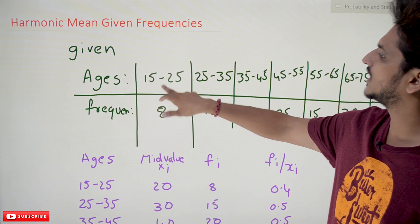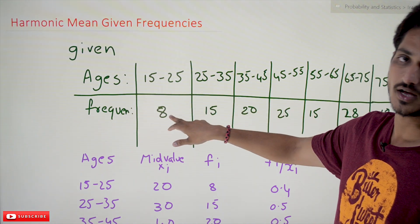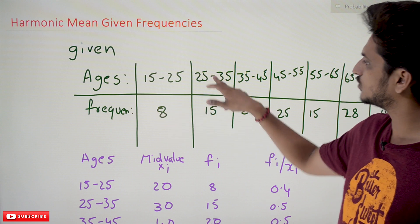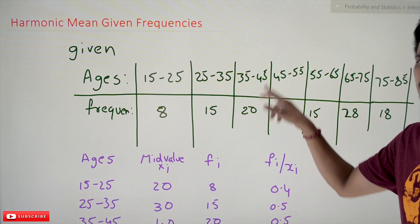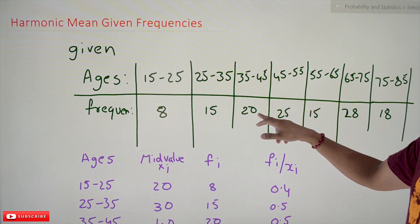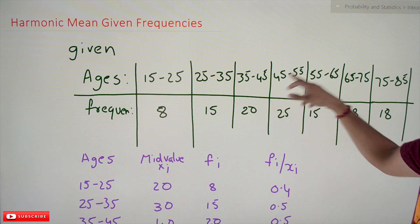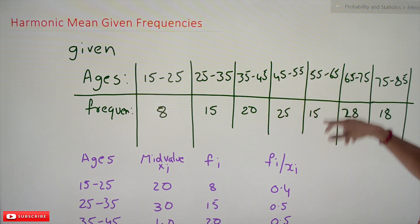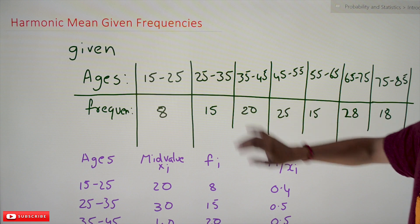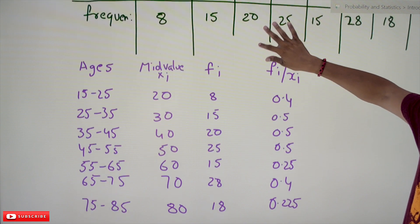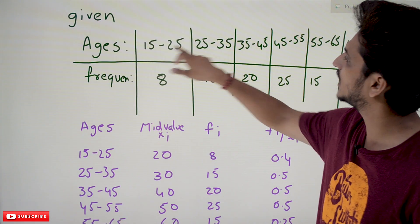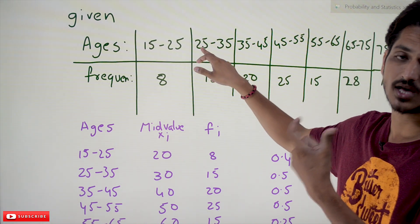Given ages and frequencies: 15 to 25 with frequency 8, meaning 8 members are there; 25 to 35 with 15 members; 35 to 45 with 20 members; 45 to 55 with 25; and so on. This is how the data is distributed. Now, whenever continuous intervals are given, you know in arithmetic mean we took the mid value - the same thing we're going to do here.